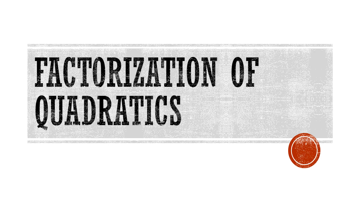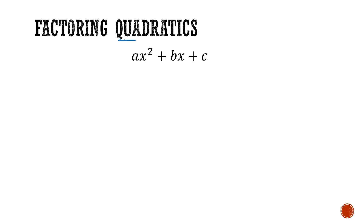This is the first in a series of videos on factoring quadratics. Quadratics is a term used to describe a second-order polynomial, where the highest exponent for our variable is 2. We're going to be referencing quadratics in the form ax squared plus bx plus c, where a and b are coefficients for x squared and x respectively, and c is a constant.